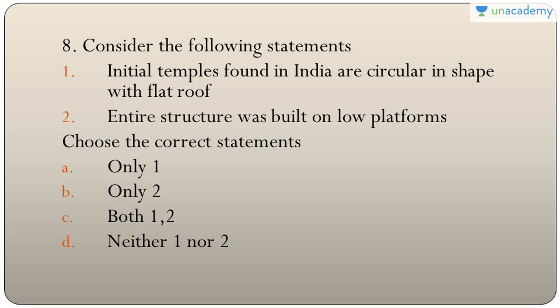Question eight: statements about initial temples found in India — they are circular in shape with a flat roof, and the entire structure was built on low platforms. The first is incorrect — initial temples were square, not circular, with a flat roof. The second is true. The answer is B — only two.